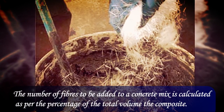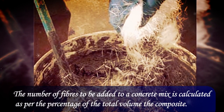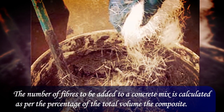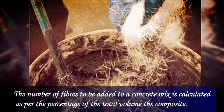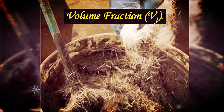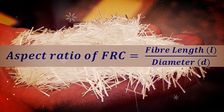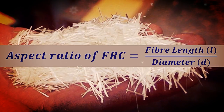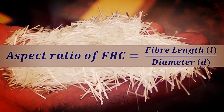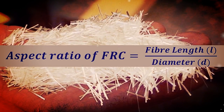Some fibers can even reduce the strength of concrete. The number of fibers to be added to a concrete mix is calculated as per the percentage of the total volume of the composite. This is termed the volume fraction, Vf. Vf ranges from 0.1 to 3.